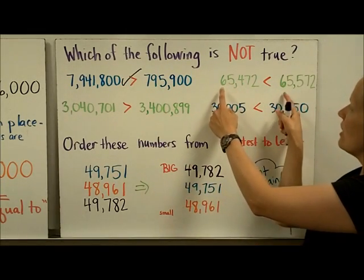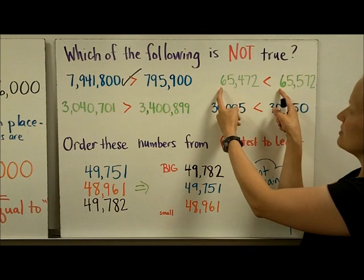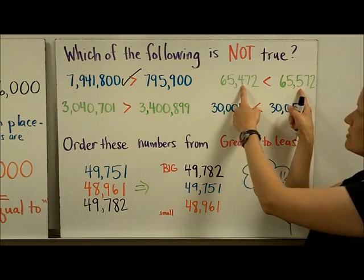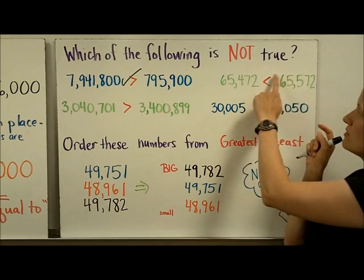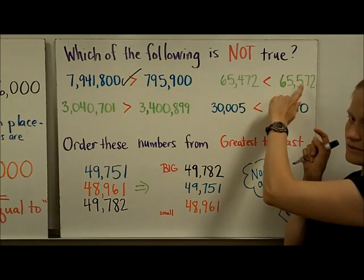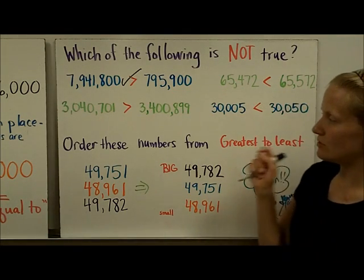Now let's look over here. I see they have the same number of digits. Ten thousands place are equal. Thousands place are the same. In the hundreds place, this one is bigger, and it is written correctly. This number is less than 65,572.